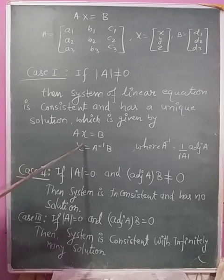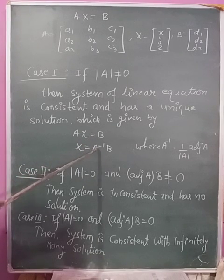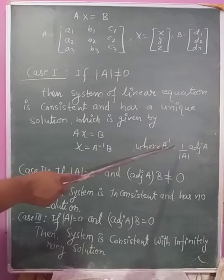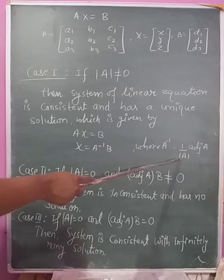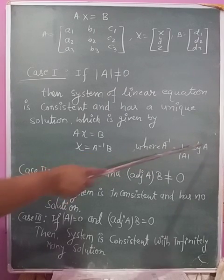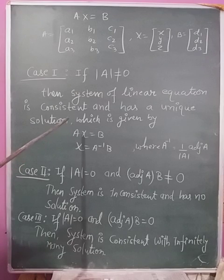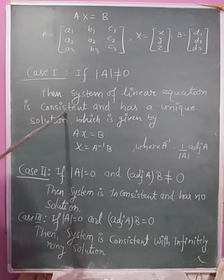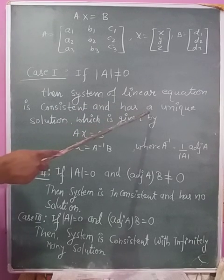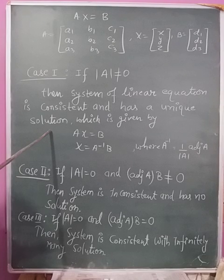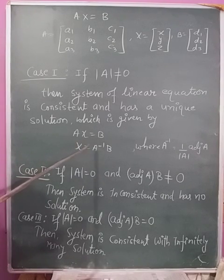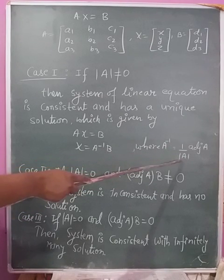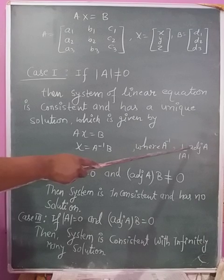The solution is given by AX = B, then capital X = A inverse B, where A inverse equals the formula 1 over determinant of A times adjoint of A.